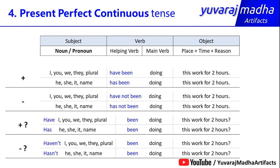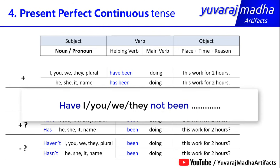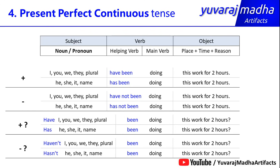For negative interrogative sentences, 'haven't' and 'hasn't' are used: 'Haven't I been doing this work for two hours?' Note that we write 'haven't' as a contraction — don't write 'have not' in the question form. If you keep 'not' separate, the subject comes between: 'Have I not been doing this work for two hours?' This rule applies to all helping verbs for negative questions. For example: 'Hasn't she been doing this work?' 'Hasn't it been doing this work?' 'Hasn't Kiran been doing this work for two hours?'